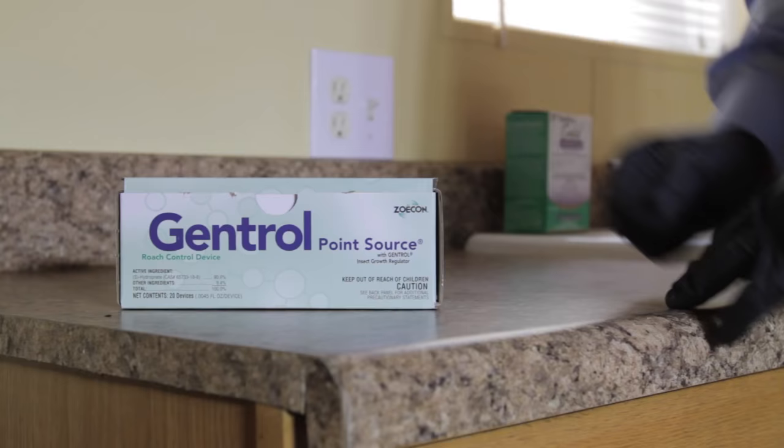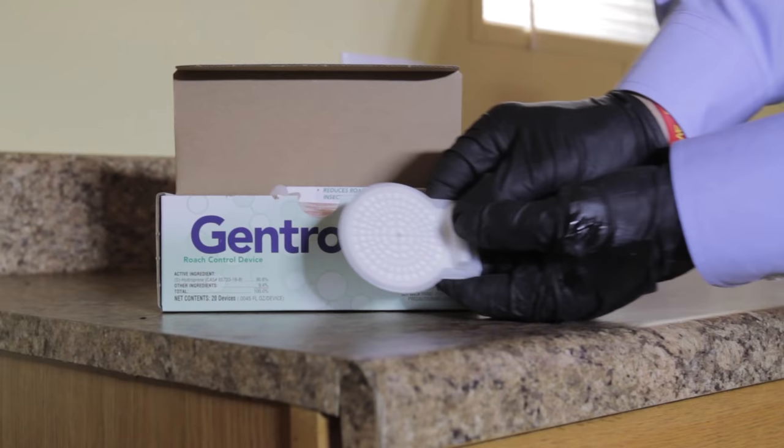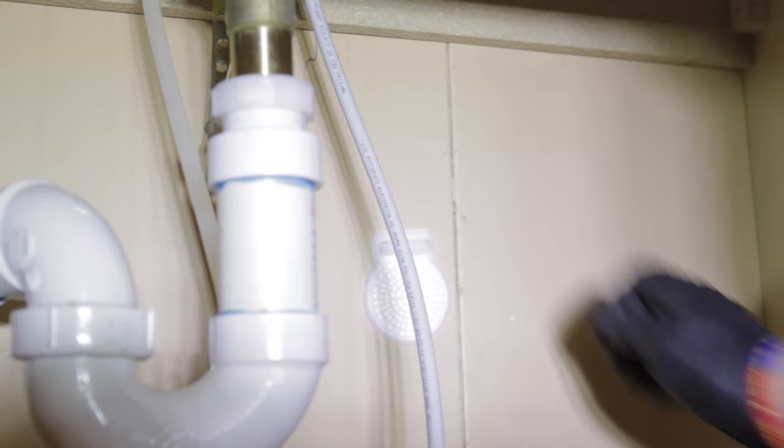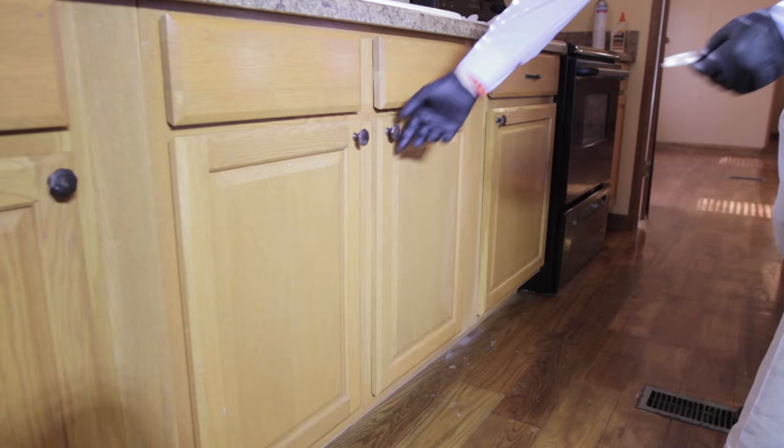Gentral point source should be used in areas where roach or pantry pest activity has been noticed. To activate Gentral point source, press firmly between thumb and forefinger on the pouch until a snapping sound is heard. Once you hear a snap, the contents of the Gentral capsule have been released.